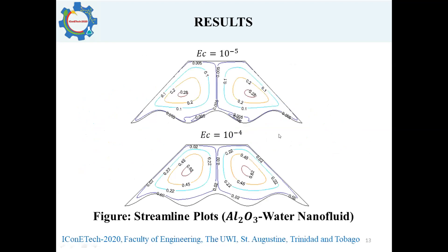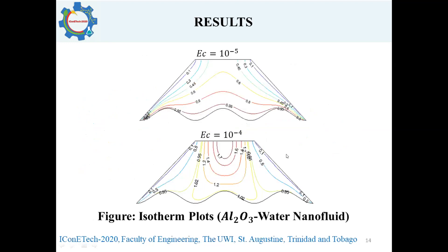Results for increased Eckert number show an increase in flow circulation intensity and an increase in temperature within the alumina-water nanofluid. Corresponding plots for SWCNT-water nanofluid were not included because there was no significant change observed, which is a result of the lower thermal expansion coefficient in that particular nanofluid.